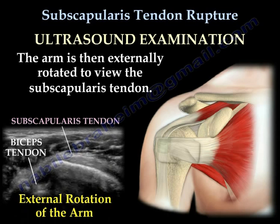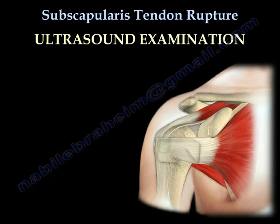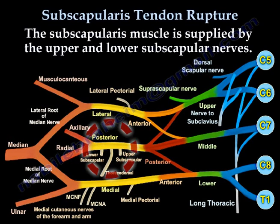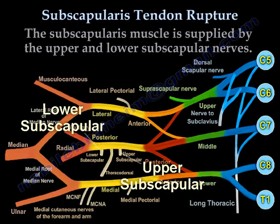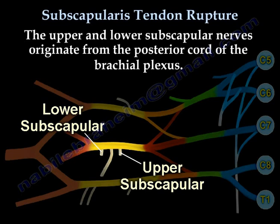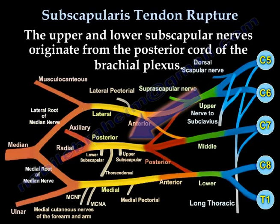The subscapularis muscle functions as an internal rotator and acts as a dynamic stabilizer of the humeral head. It is supplied by the upper and lower subscapular nerves, which originate from the posterior cord of the brachial plexus.